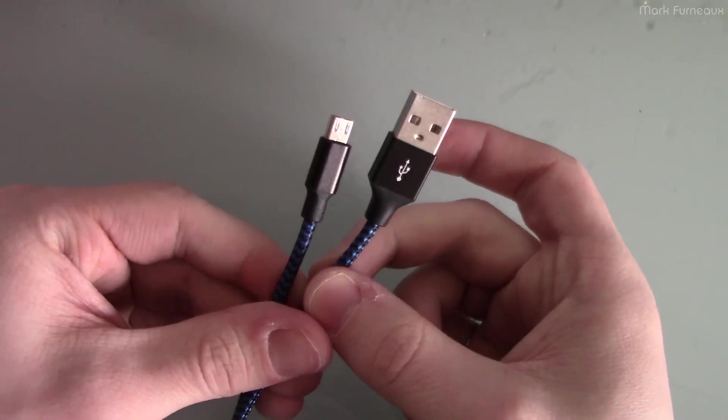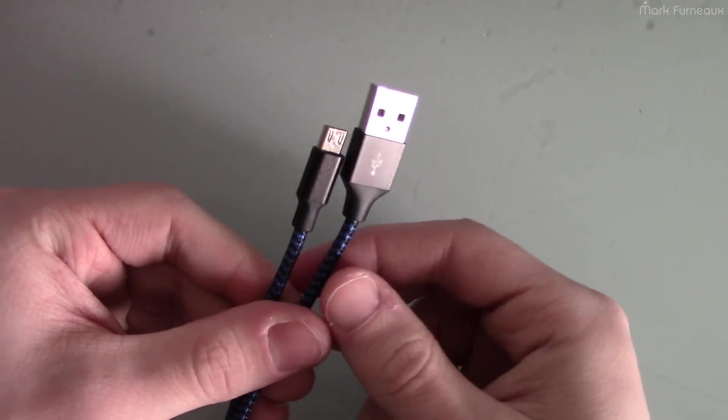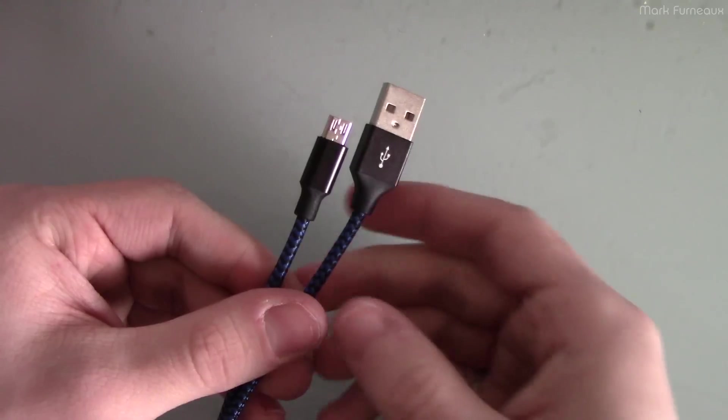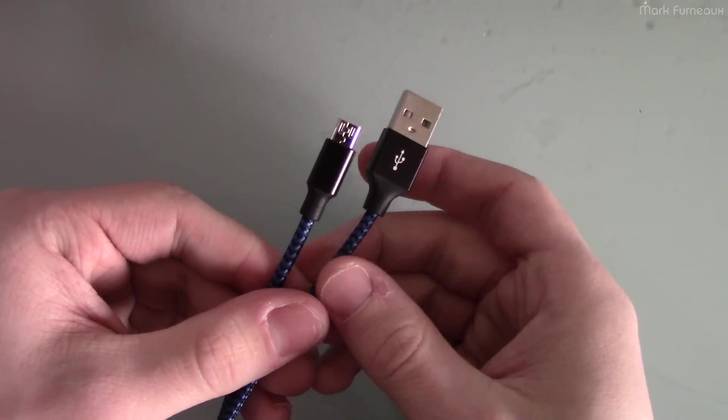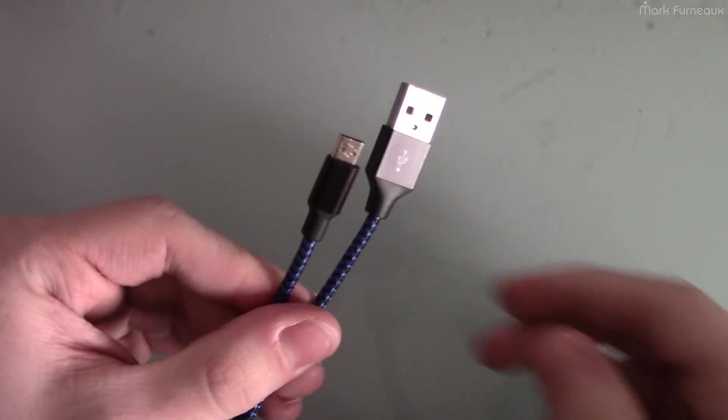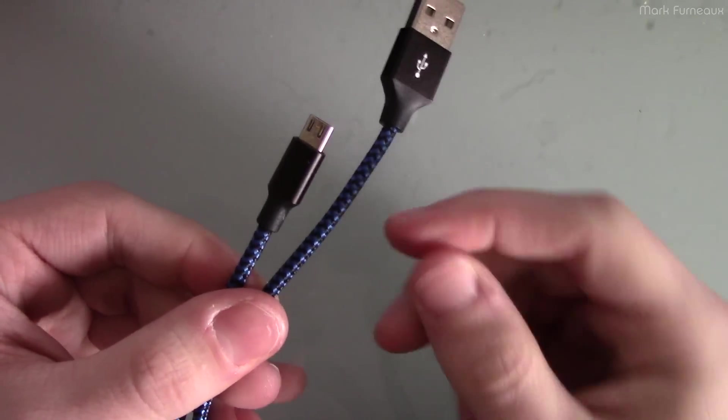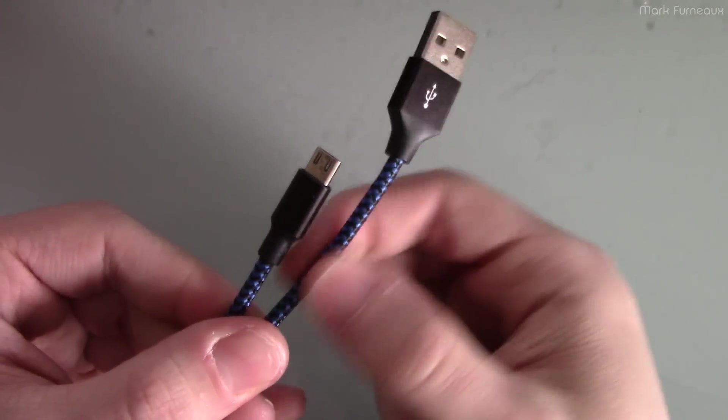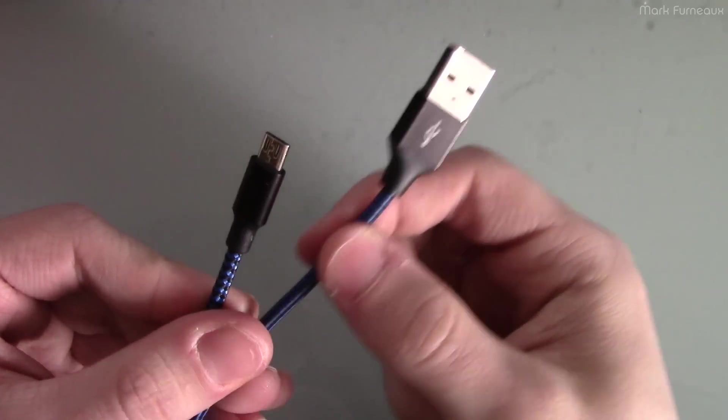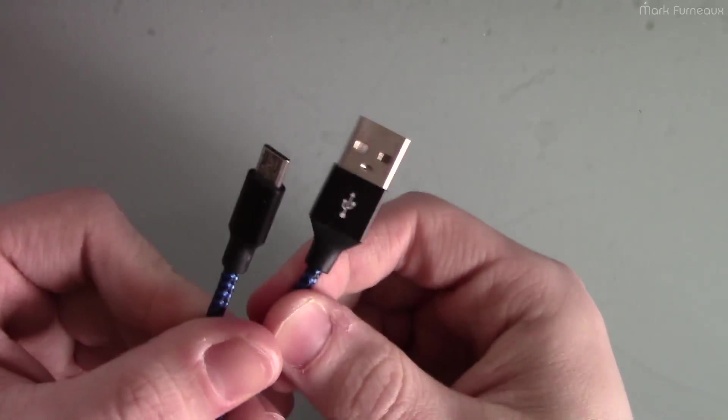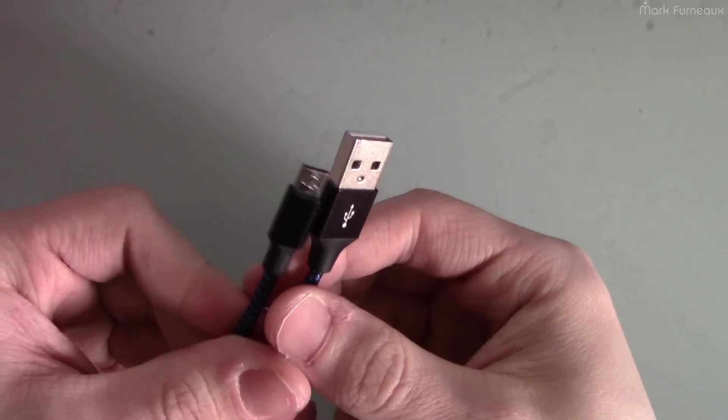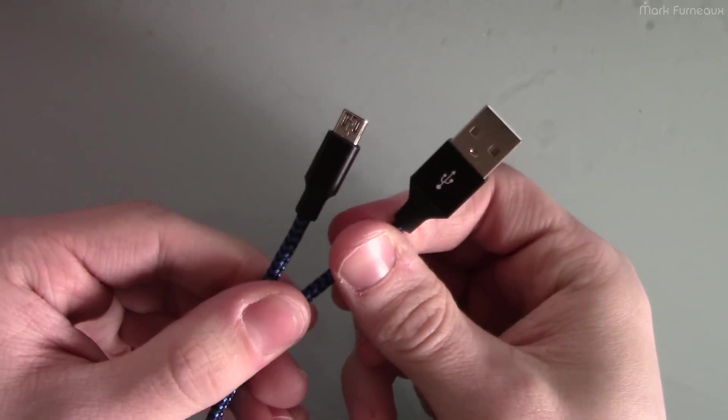And I'm not going to name any brands because this is a generic design that's been completely rebranded by many different companies. But they all look the same. The connectors all look identical and the braid looks identical. The only difference, of course, is that this color sometimes varies. Some of them are blue, some of them are white, some of them are red. But it's basically the same cable all around. And they claim all sorts of great things.